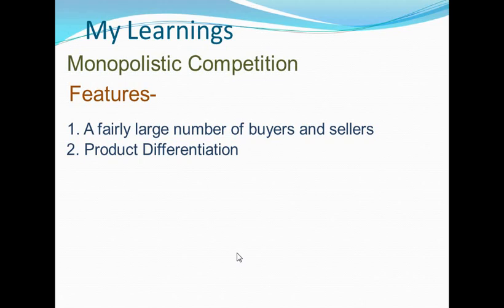Product differentiation: in monopolistic competition, the products sold by sellers are not perfect substitutes of each other — they are not exactly identical in terms of shape, size, color, weight, etc. However, the products are close substitutes of each other, differentiated on the basis of shape, size, color, packing, branding, etc. This is known as product differentiation.